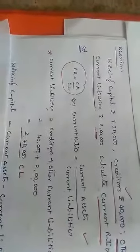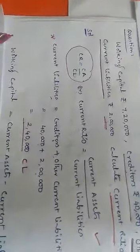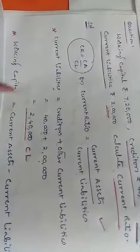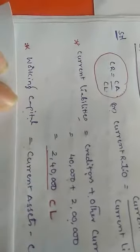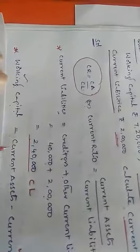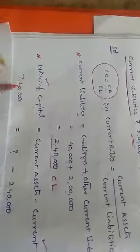Now to find current assets, we use the working capital formula: working capital equals current assets minus current liabilities. In this problem, working capital is 7 lakhs 20 thousand and current liabilities are 2 lakhs 40 thousand. Rearranging: current assets equals working capital plus current liabilities, which is 7,20,000 plus 2,40,000, giving us current assets of 9 lakhs 60 thousand.